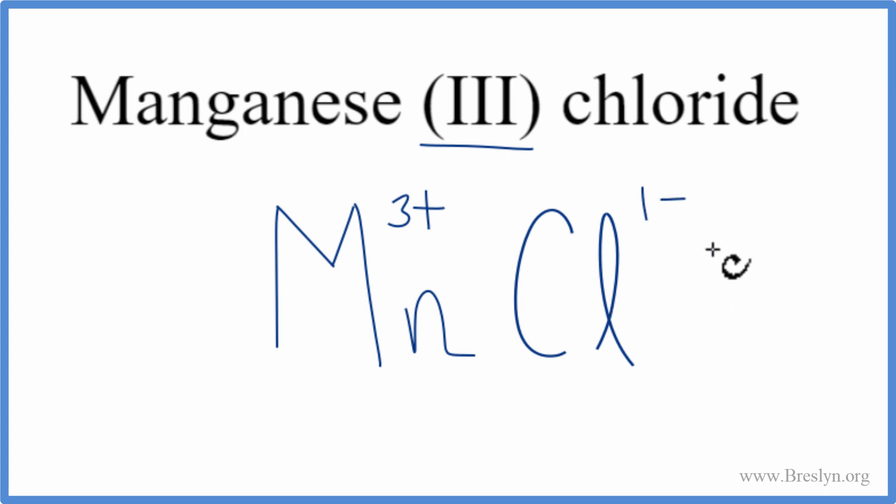So for an ionic compound, these should add up to 0, which they don't. But we can use something called the crisscross method to make that happen. We can move the 1 down here, and the 3 over here.